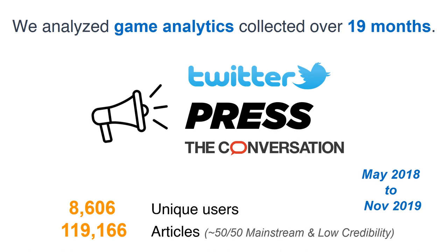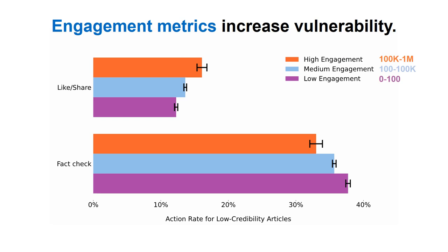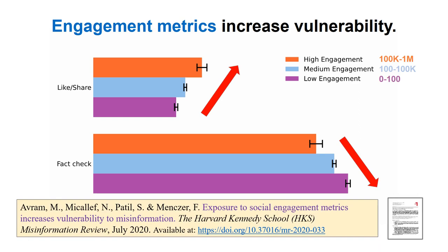Most of the data is from players from the United States, Australia, United Kingdom, and Canada. Even though FAKEY shows a randomly generated engagement metric with each article, we found that the value of the metric can influence player decisions. When articles were accompanied by higher values of social engagement, players were more likely to like or share them and less likely to engage in fact-checking. In other words, metrics that indicate high social engagement make users more vulnerable to the influence of misinformation. We published this result in the Misinformation Review Journal.